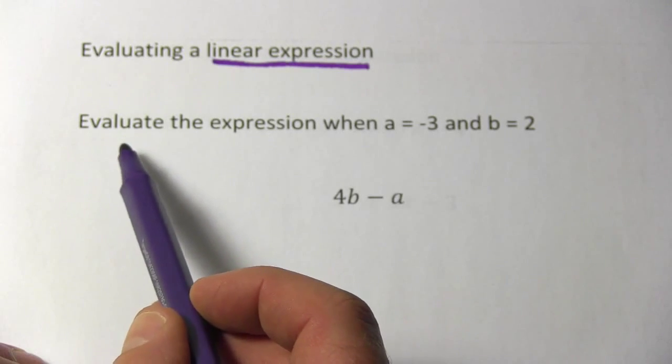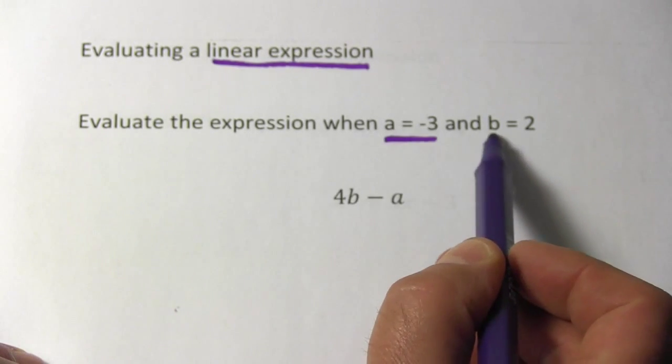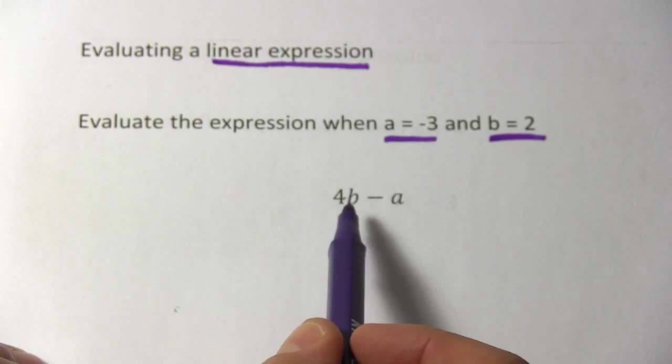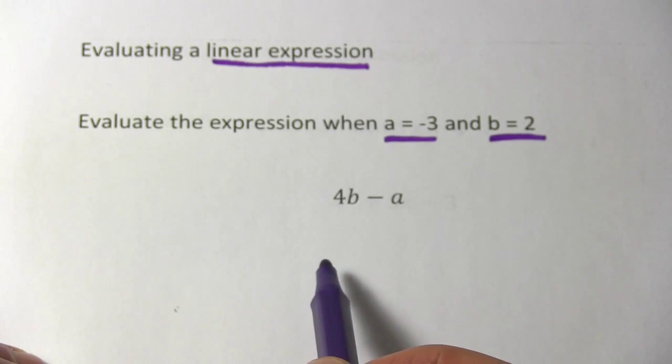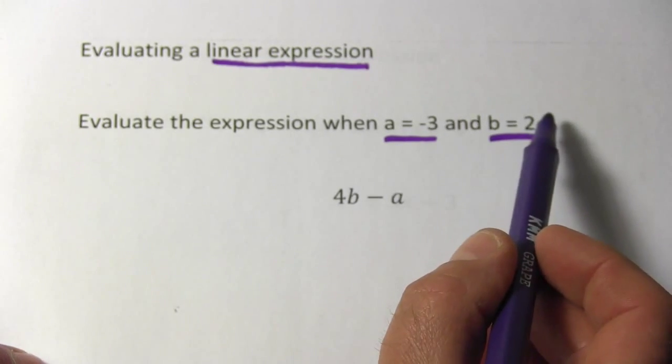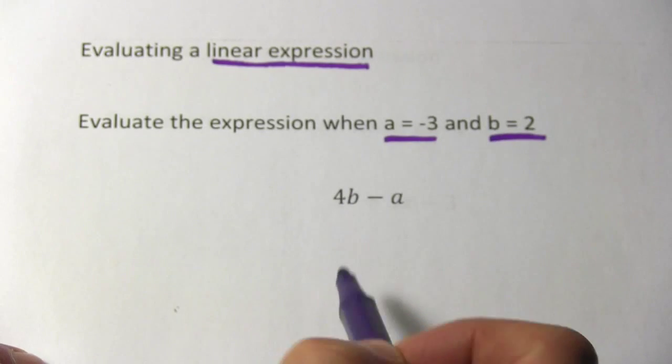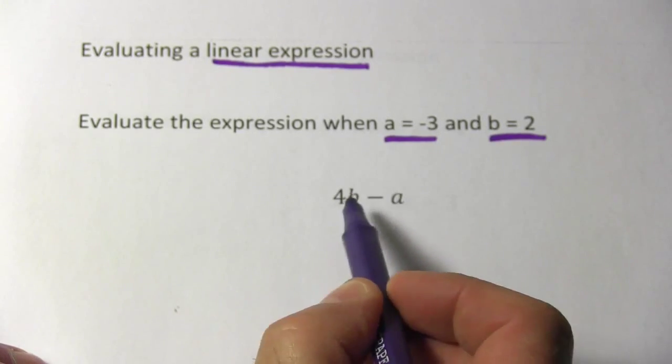To evaluate it, we have to take the values they're giving us for a and b and substitute them in. The way you should think about doing this is to take the number, put it inside parentheses, and replace the letters with that.